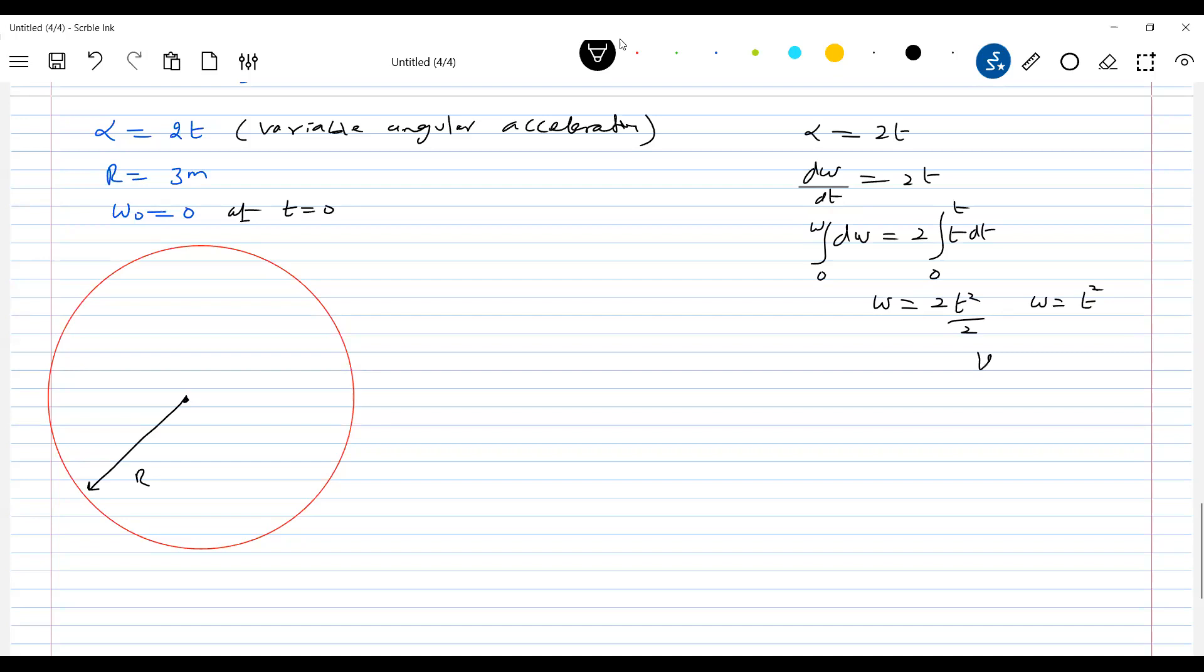Then how to get v? v equal to rω. So rt². So linear velocity will change. Then what about the a_tangential? So a_tangential is what? Equal to rα. R is how much? 3. Alpha is how much? 2t. So this will be 6t. Look at the tangential acceleration - constant or variable? It's in fact variable. It's going to vary with the time.